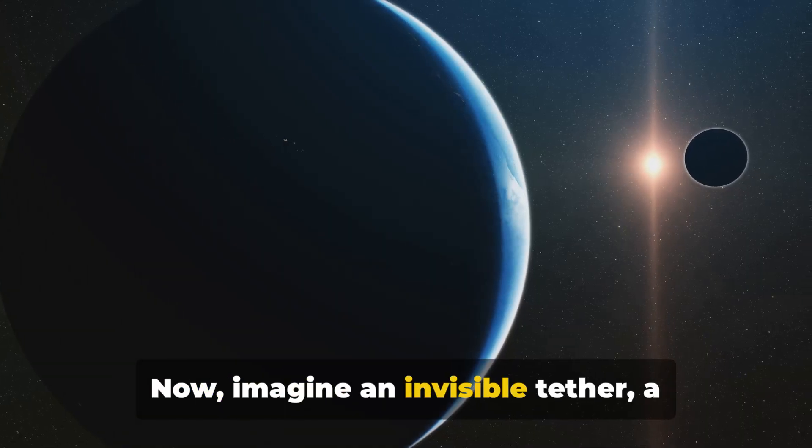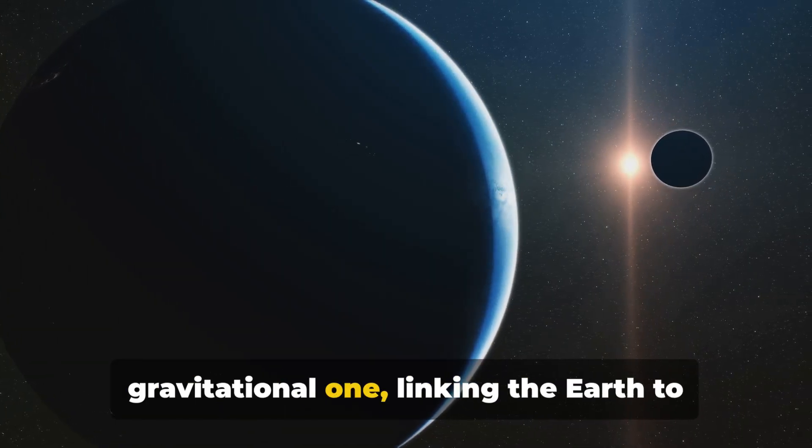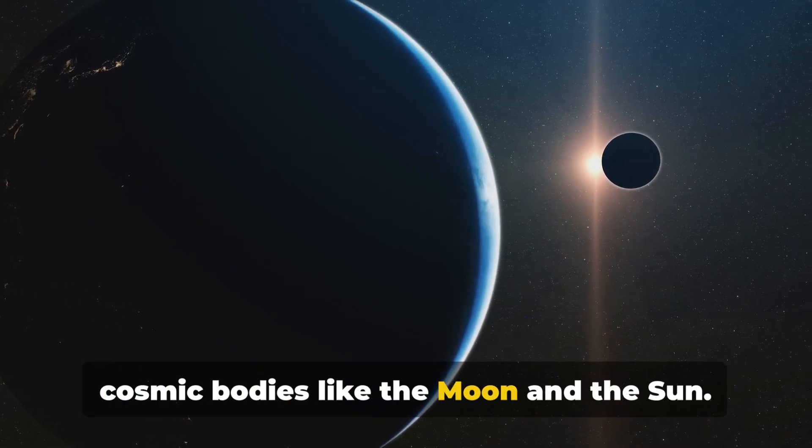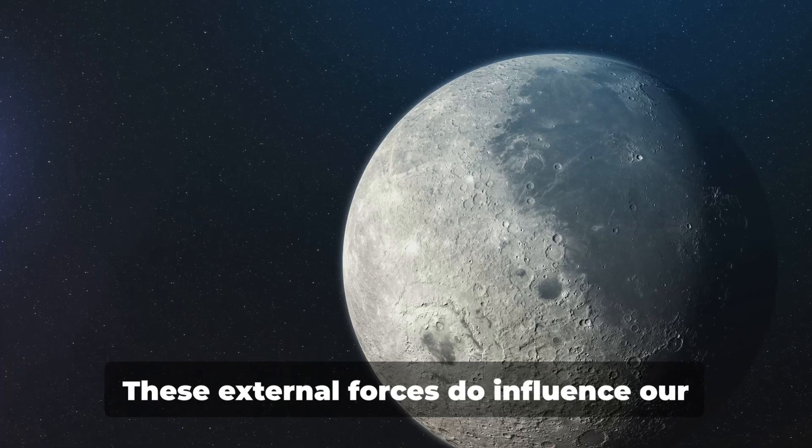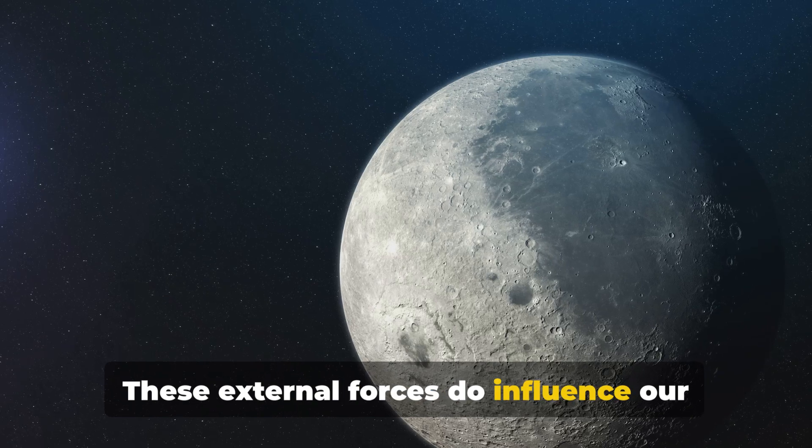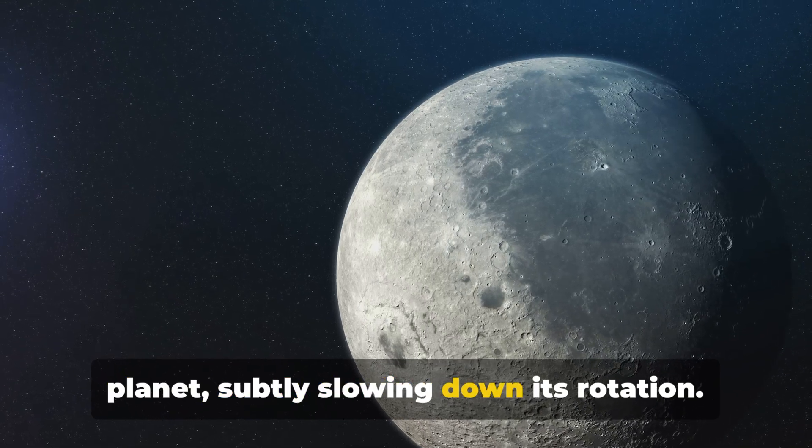Now imagine an invisible tether, a gravitational one, linking the Earth to cosmic bodies like the Moon and the Sun. These external forces do influence our planet, subtly slowing down its rotation.